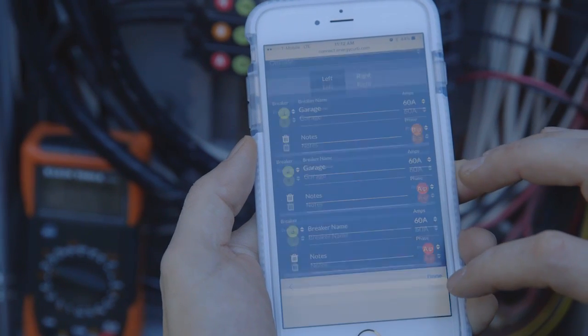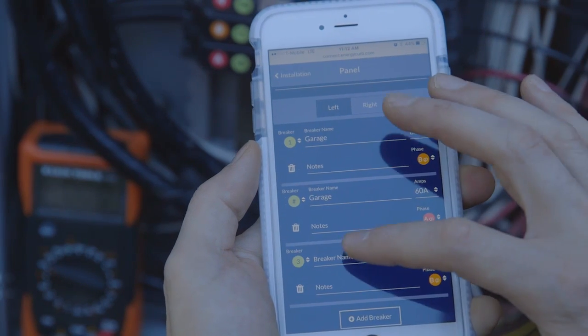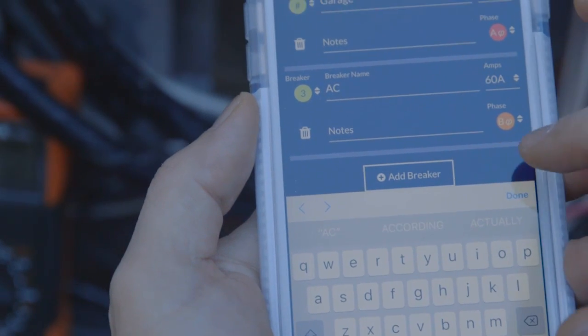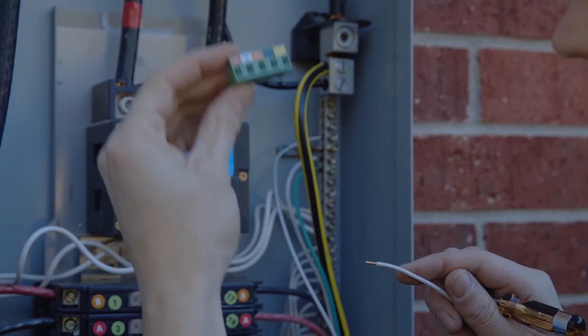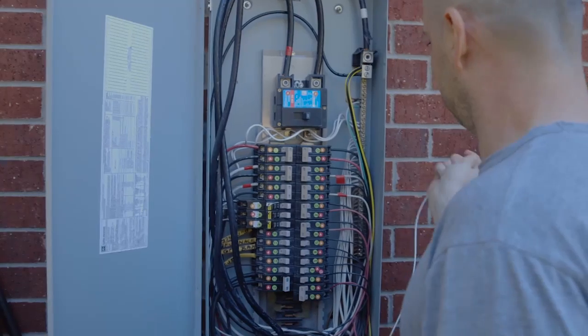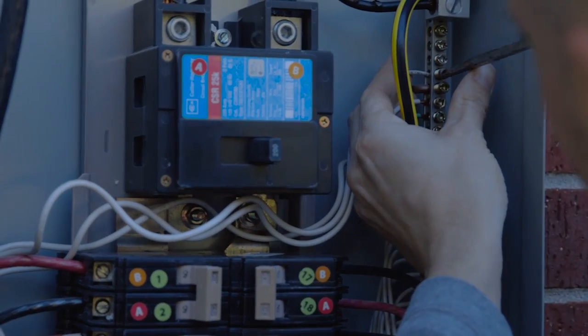Now we're ready to connect and power up Curb. Find the Curb voltage connector and switch off the main breakers.